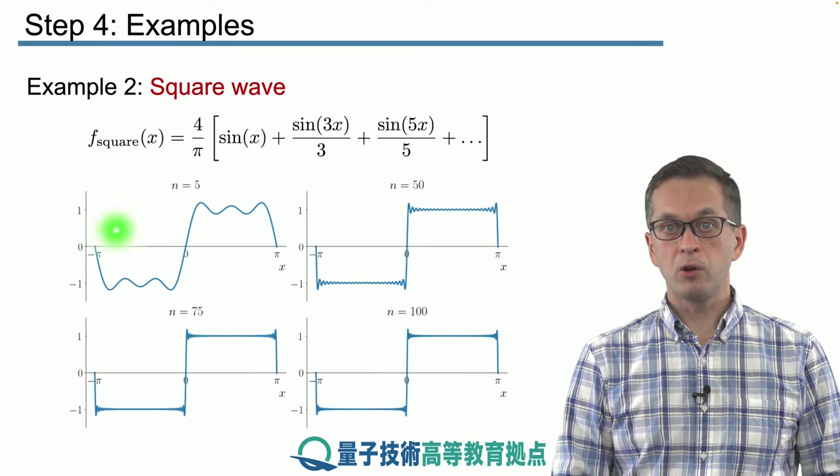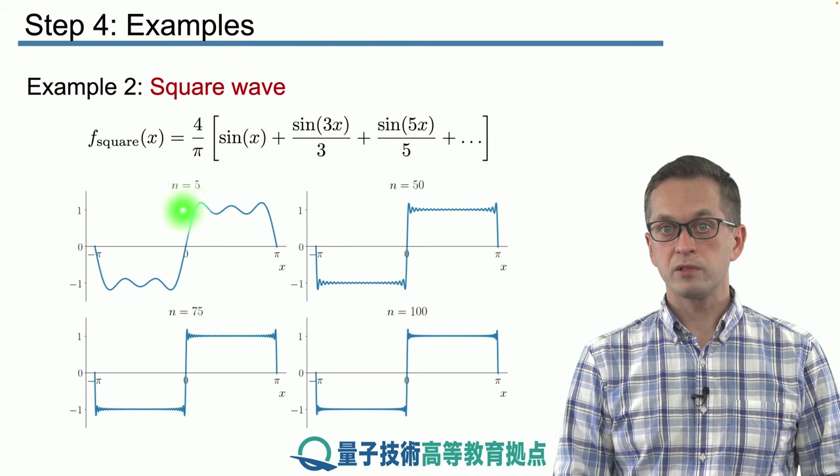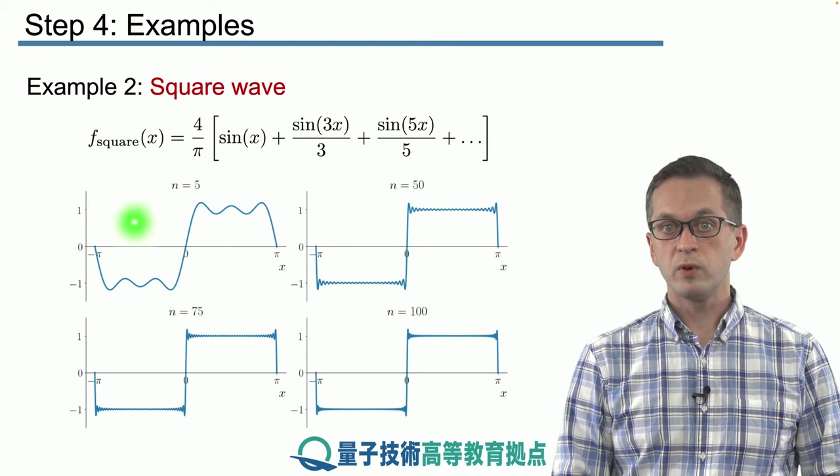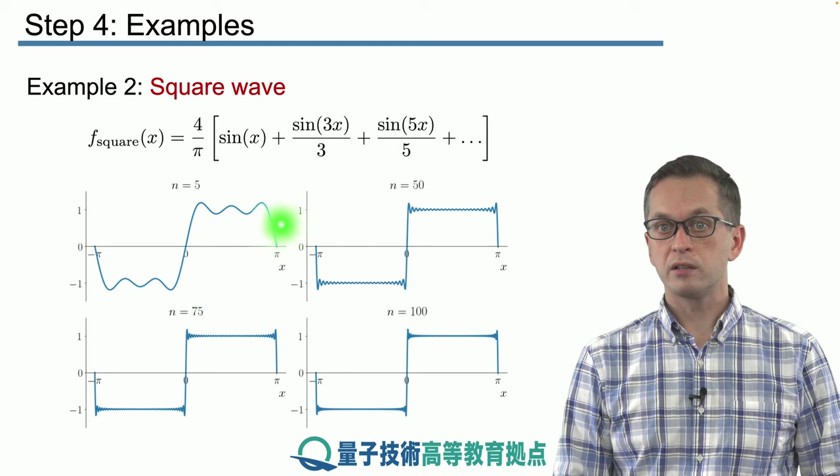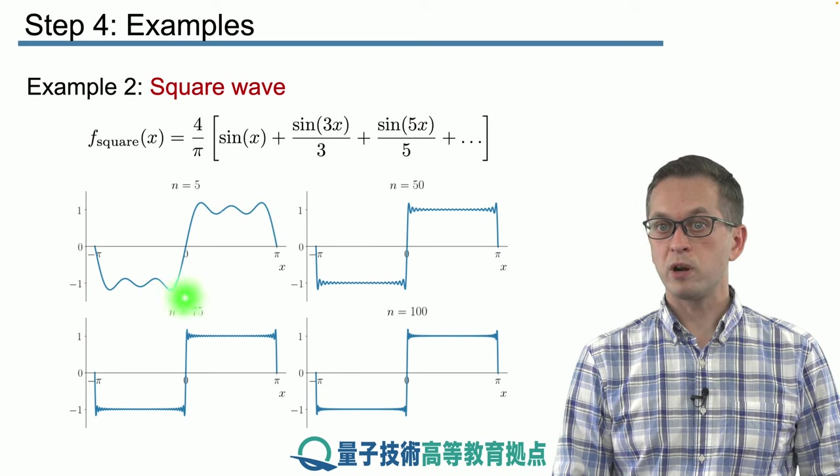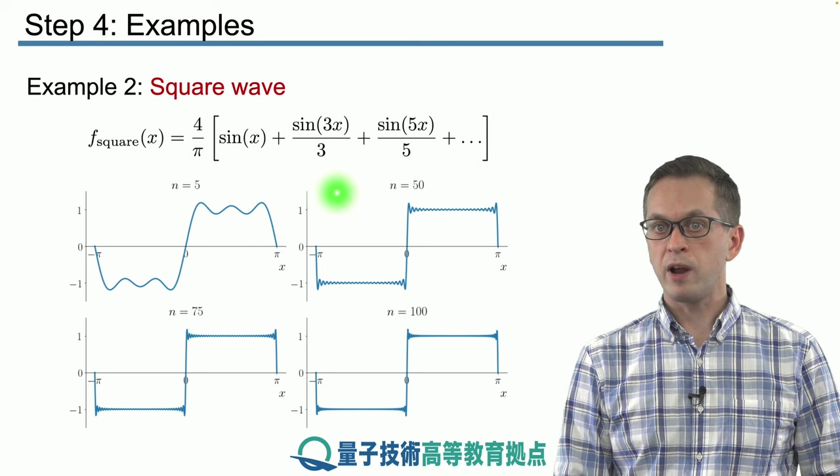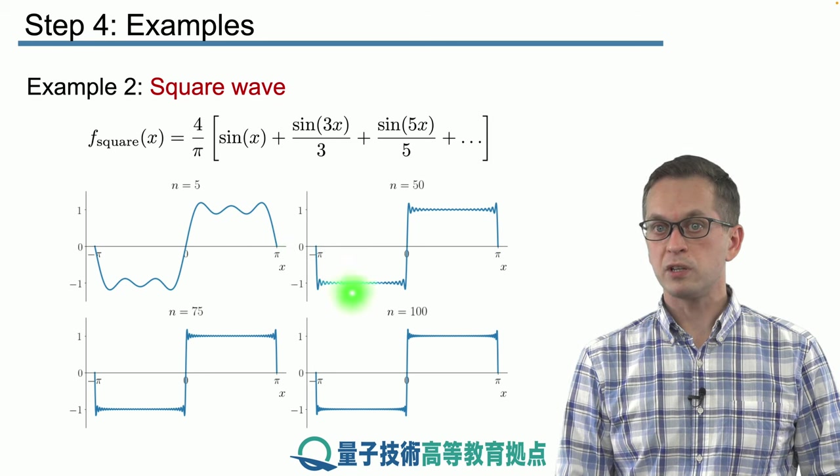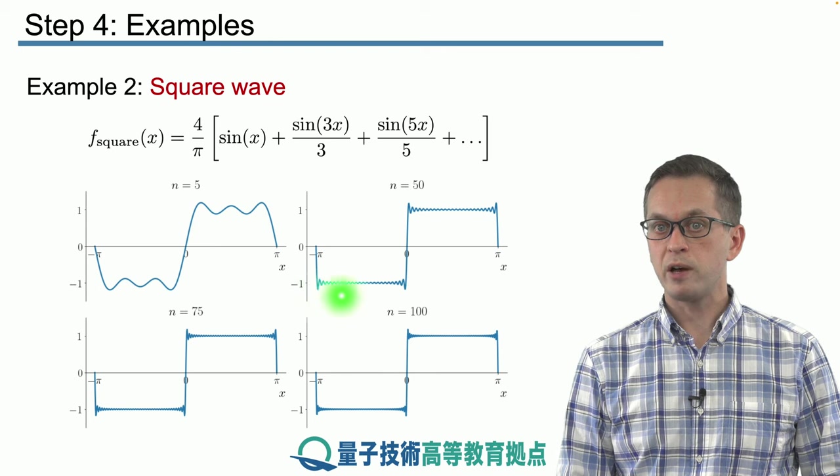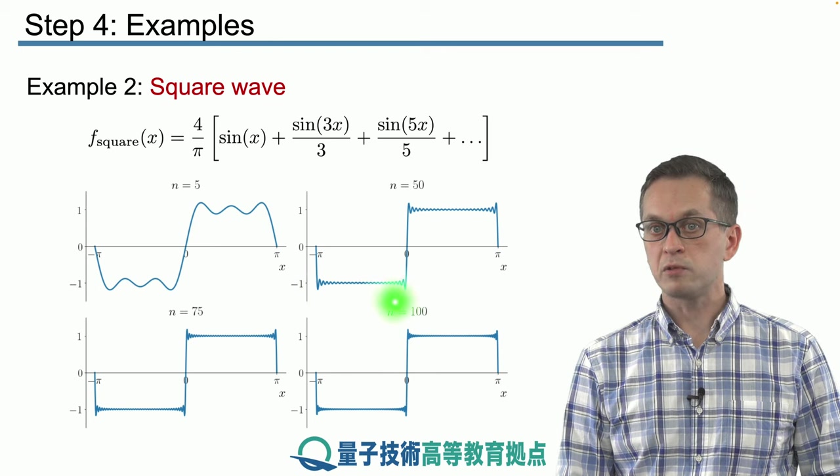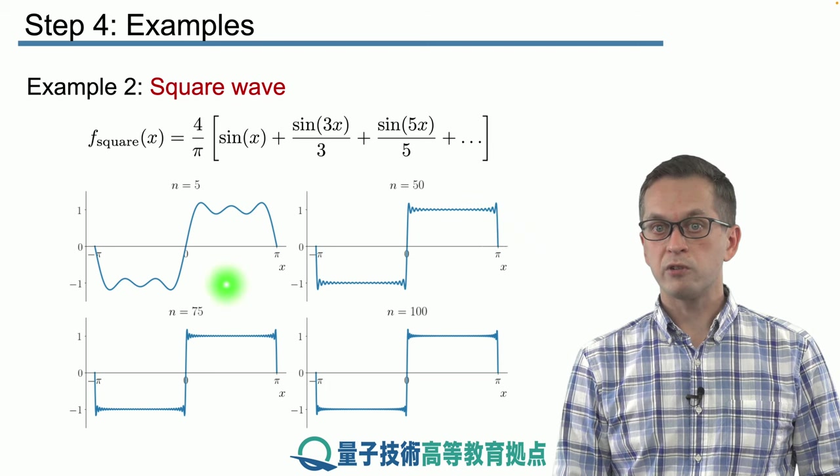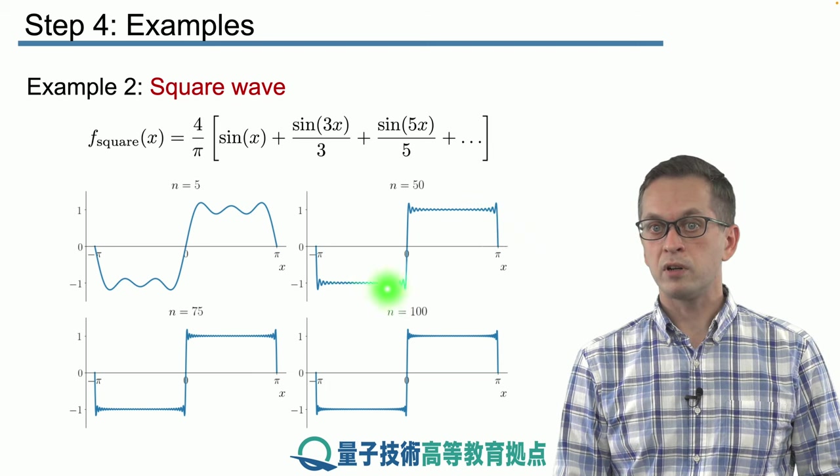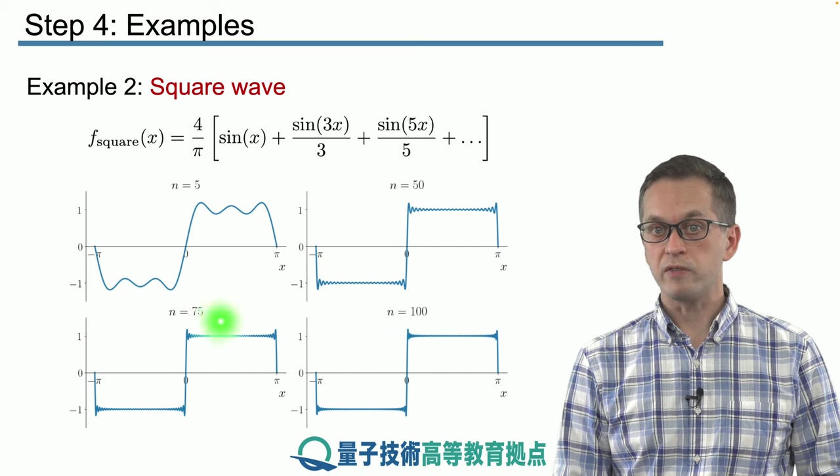And this is what it looks like. Already for the first five terms, when n equals 5, we can see that it's kind of starting to look like the desired square wave function. For n equals 50, already we can see that in this region, it's pretty flat, very close to minus 1. And then around x equals 0, it quickly jumps up and it stays very close to 1. And increasing the number of n, the number of terms in our sum, just reinforces this behavior.